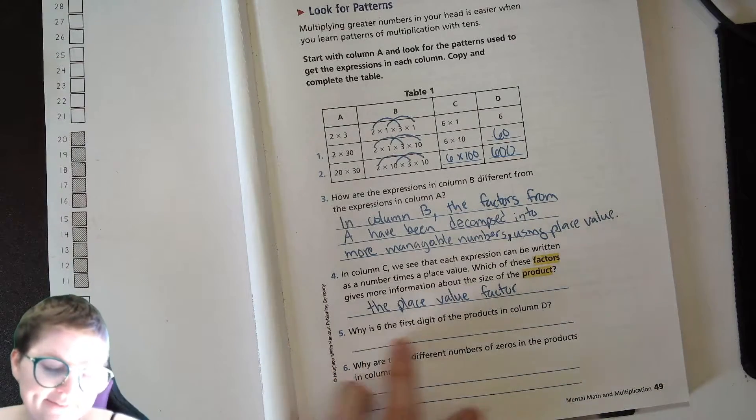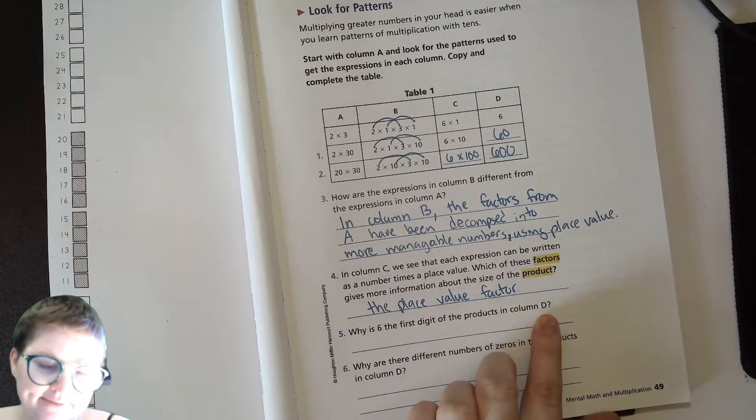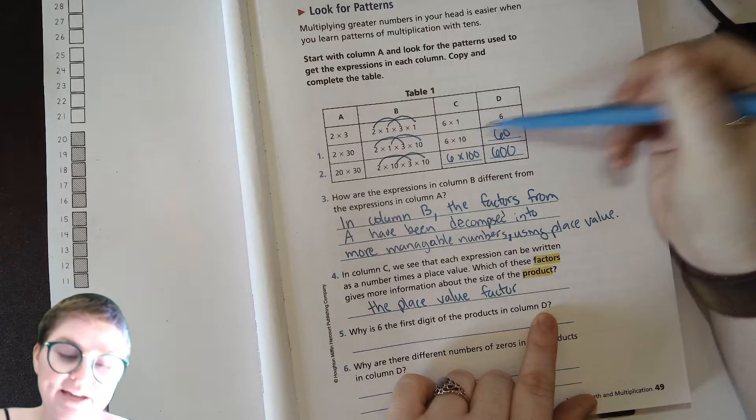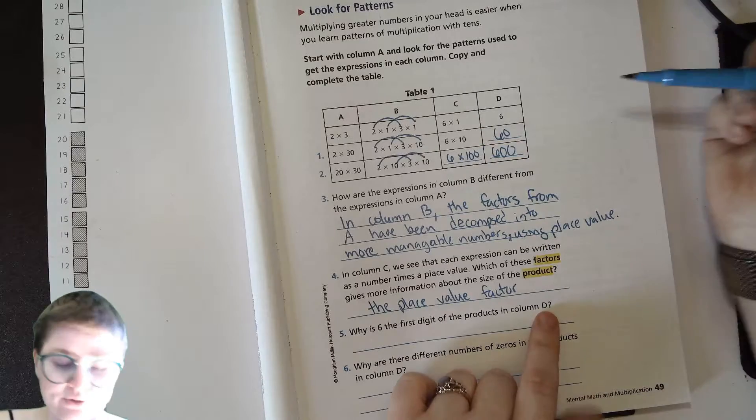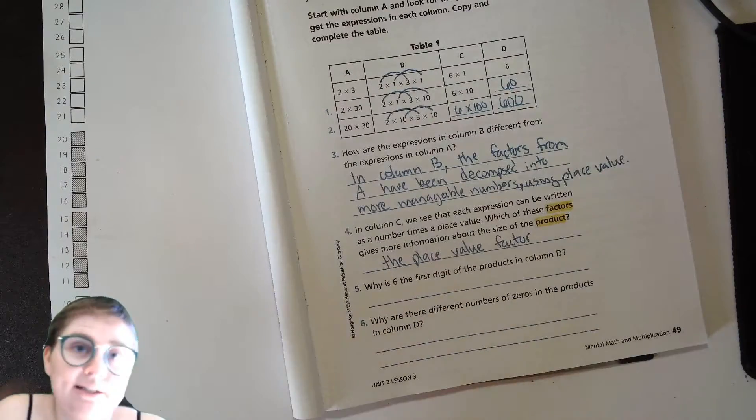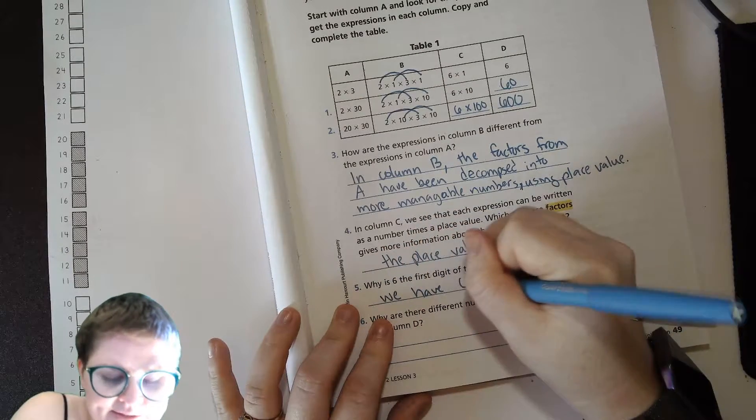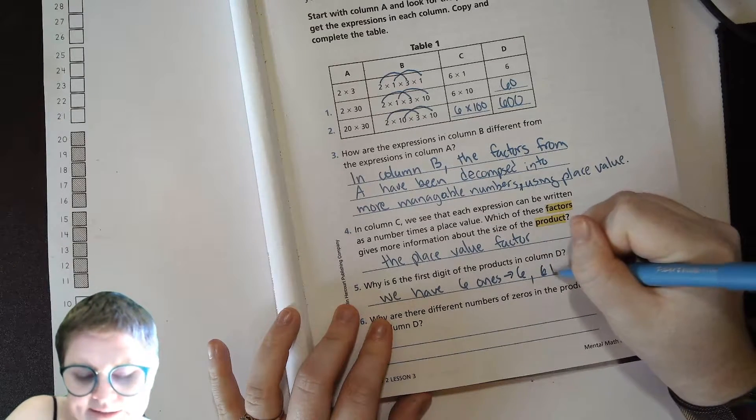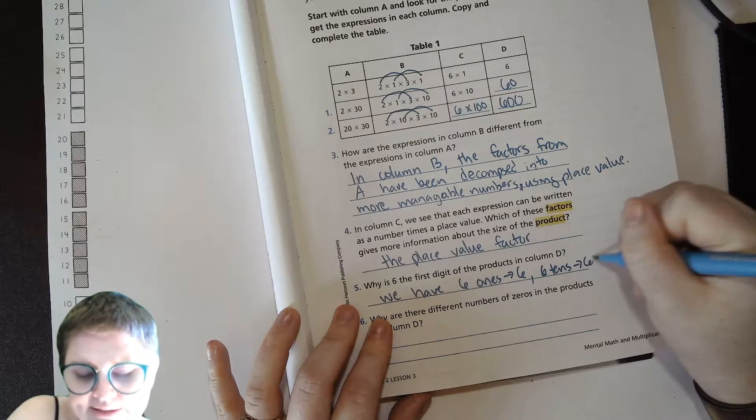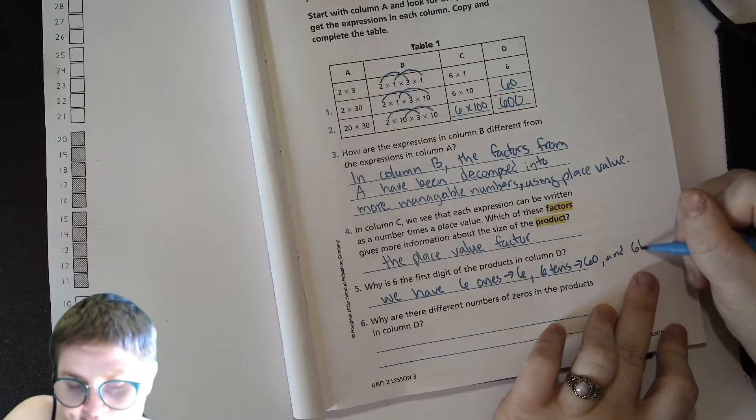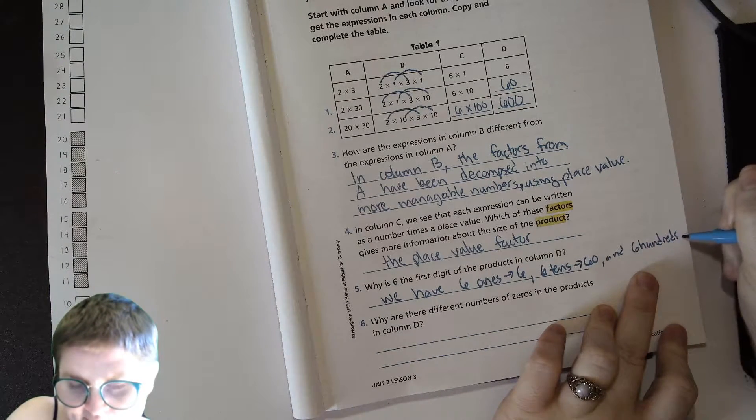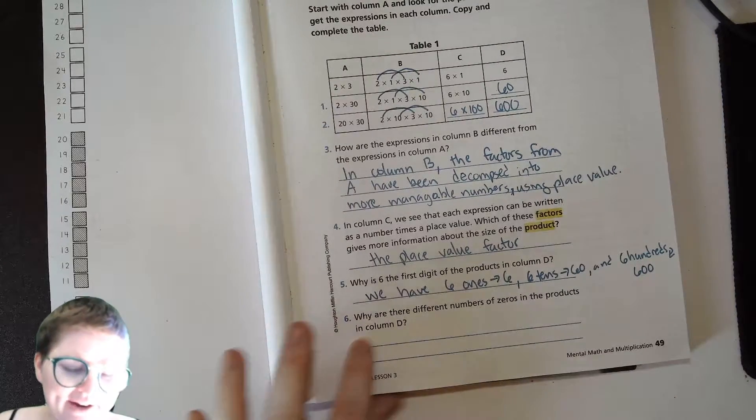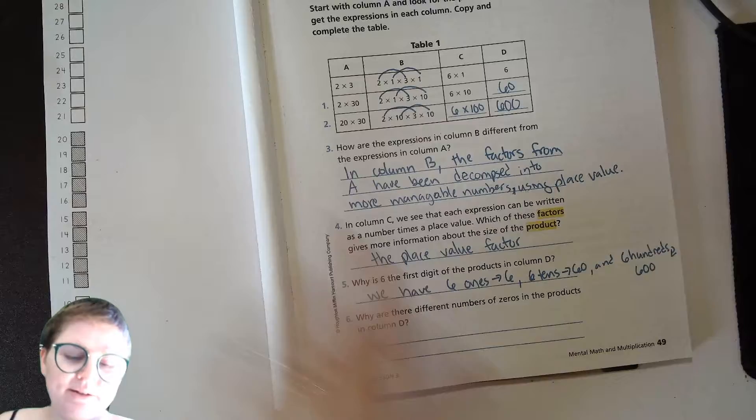Why is 6 the first digit of the products in column D? Well, we have 6 times 1 and we got 6 ones, we have 6 times 10 and we got 6 tens, we have 6 times 100 and we got 6 hundreds. So it only makes sense, right? So we have six ones which is six, six tens which is sixty, and six hundreds which is six hundred.